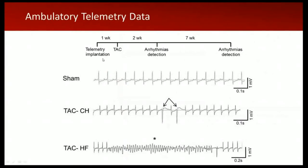We could detect mostly all types of arrhythmia: sinus beats, PVCs, bigeminy, salvos, non-sustained and sustained ventricular tachycardia, and Torsades de Pointes — polymorphic ventricular tachycardia. In SHAM, most cases showed sinus beats with PVCs, while in compensated hypertrophy there were some extra systoles and bigeminy or trigeminy. In heart failure, we observed an increase in ventricular tachycardia as well as polymorphic forms, which could explain the increased mortality due to ventricular tachycardia.